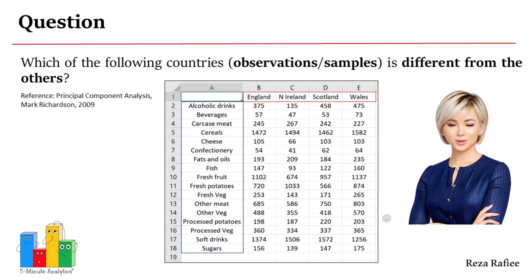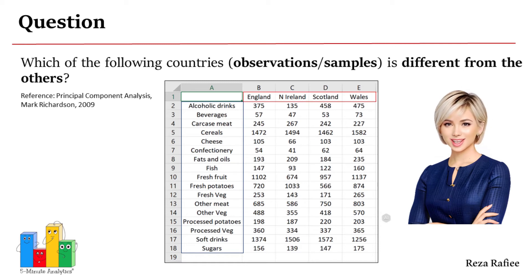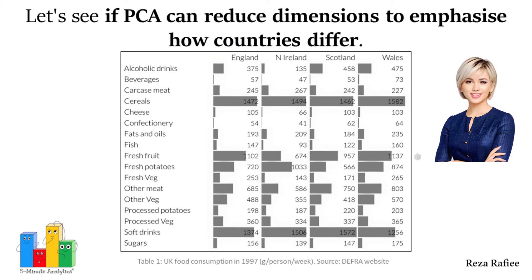Let's explore a question related to a 17-dimensional data set: which country among the following observations or samples stands out from the rest? This data set, known as the UK Food Consumption data set, has been covered in a previous lecture and video, which you are welcome to revisit for more details. In this example, we are going to assess whether the PCA technique can reduce the dimensions or features of the data set to emphasise how countries differ.